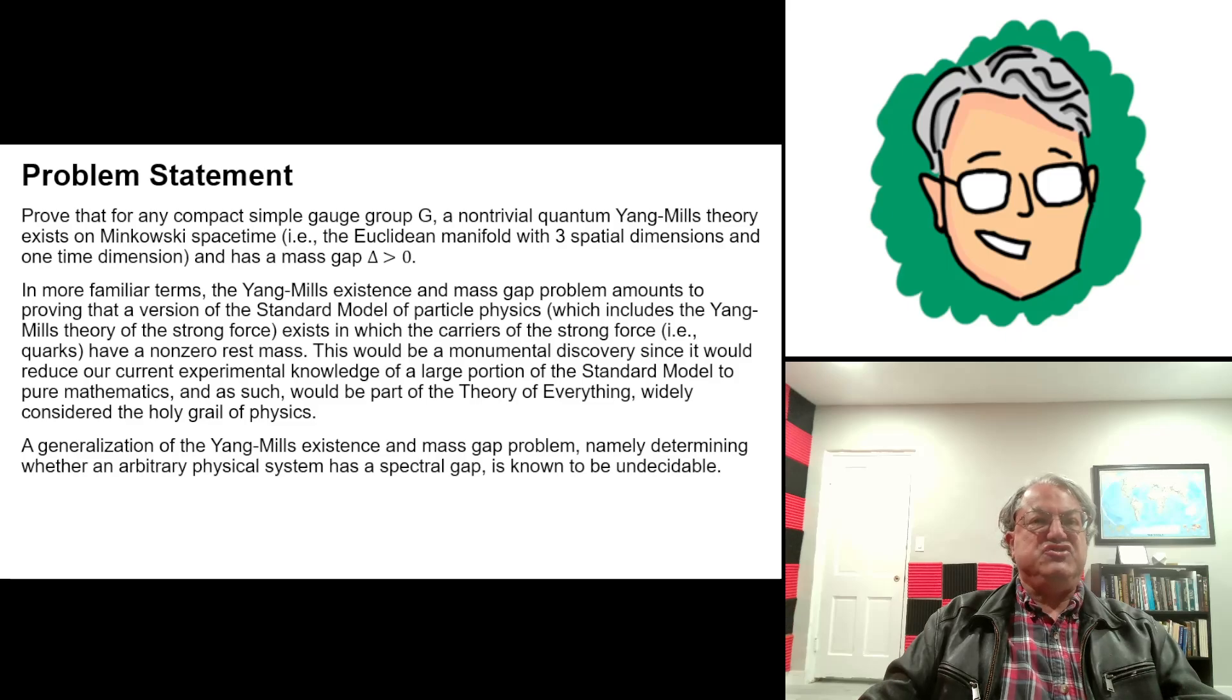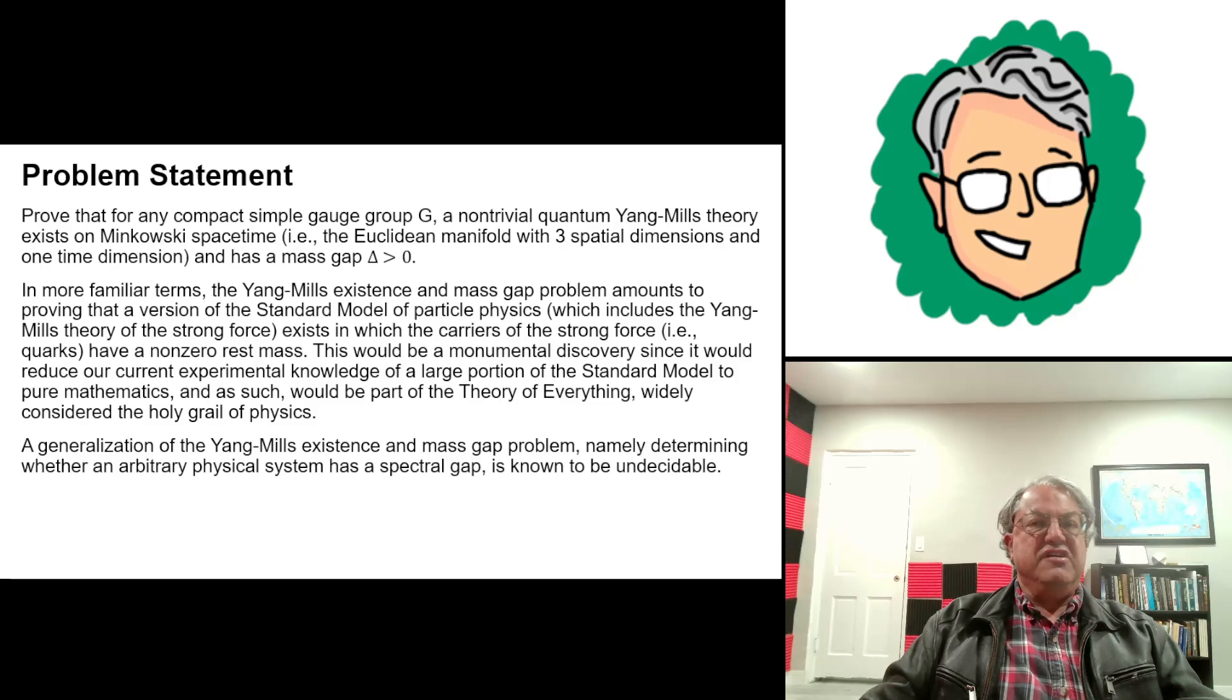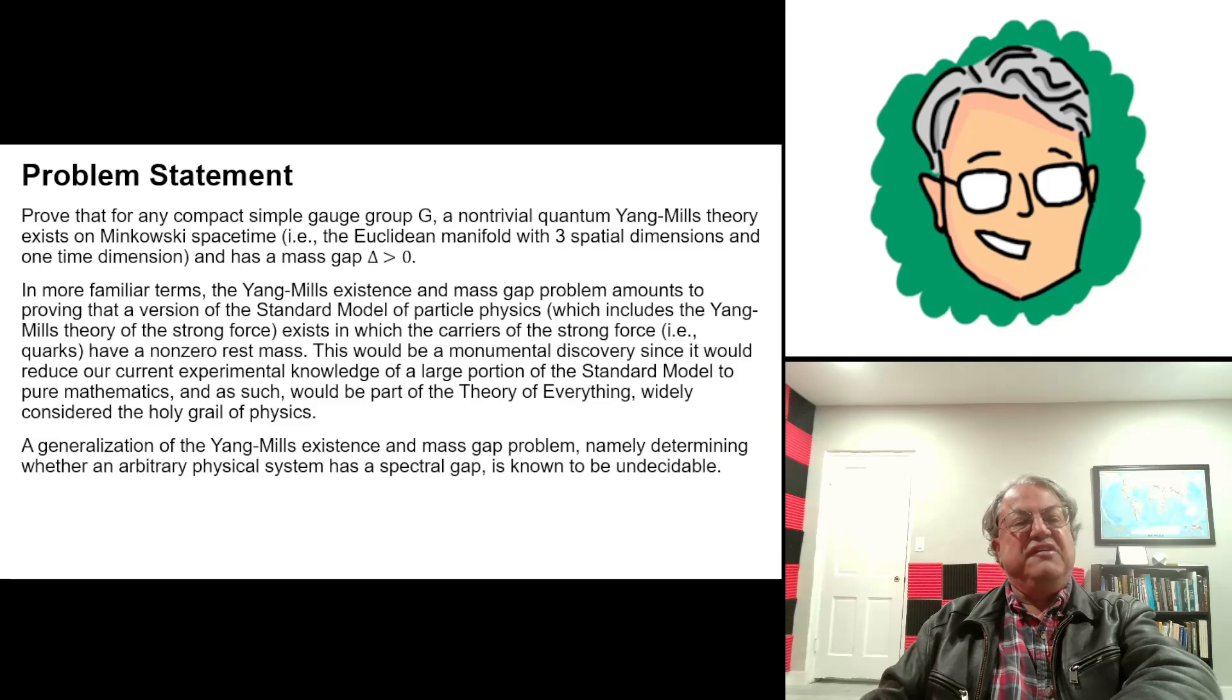And it'd be nice to also unify the strong force. And I should mention the Yang-Mills theory. Yang-Mills theory is the theory of the strong nuclear force. It was developed by these two physicists, Yang and Mills in the 1950s, I think in 1953. And physicists are trying to unify that as well. And one way to do that would be to prove that you solve this problem, the Yang-Mills existence and mass gap. That'd be a really nice thing to do, but nobody really knows how to do it yet.